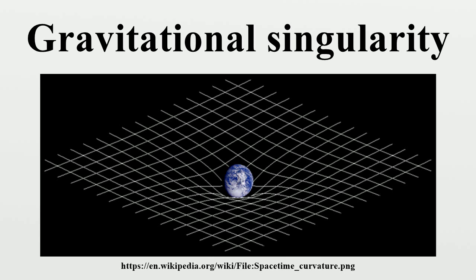According to modern general relativity, the initial state of the universe at the beginning of the Big Bang was a singularity. Both general relativity and quantum mechanics break down in describing the earliest moments of the Big Bang, but in general, quantum mechanics does not permit particles to inhabit a space smaller than their wavelengths. Another type of singularity predicted by general relativity is inside a black hole.